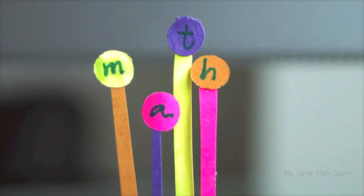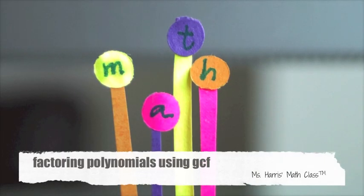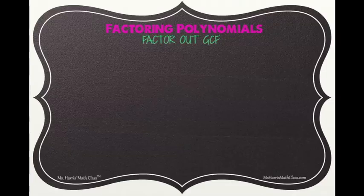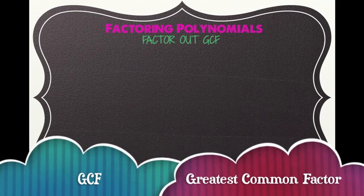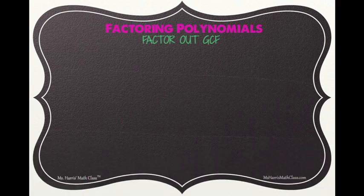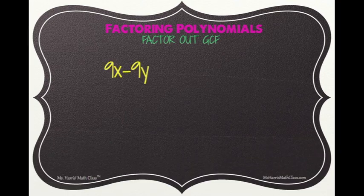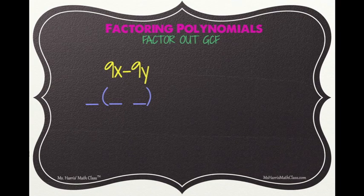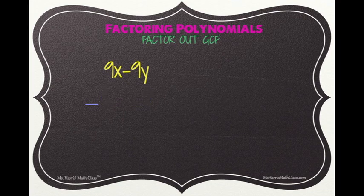Miss Harris here with today's lesson: factoring polynomials using greatest common factor. Whenever you're factoring, always begin by checking for a common factor. If there's one, factor out the greatest common factor, or GCF. Once you've determined there is a common factor, draw a skeleton — leaving a space on the outside of the parentheses for the GCF and spaces on the inside for the remaining factors.